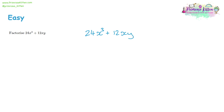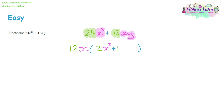Let's look at one more factorization: 24x³ plus 12xy. Look at the numbers — the highest common factor of 24 and 12 is 12. Then look at the letters: we've got x³ and xy, both have one x in common, so move that to the outside too. Dividing: 24÷12 is 2, and x³÷x is x². Then 12÷12 is 1, and xy÷x is y. We just write y rather than 1y.